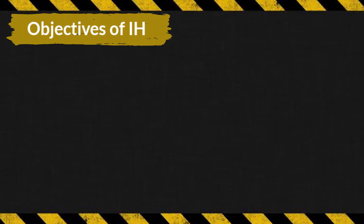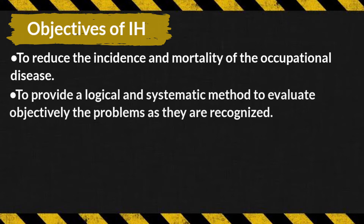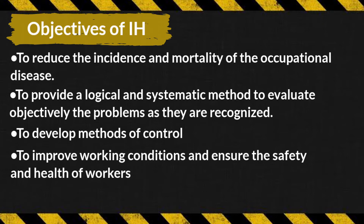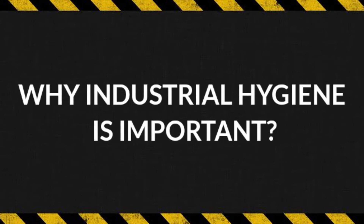The objectives of industrial hygiene are: to reduce the incidence and mortality of occupational disease; to provide a logical and systematic method to objectively evaluate problems as they are recognized; to develop methods of control; and to improve working conditions and ensure the safety and health of workers.